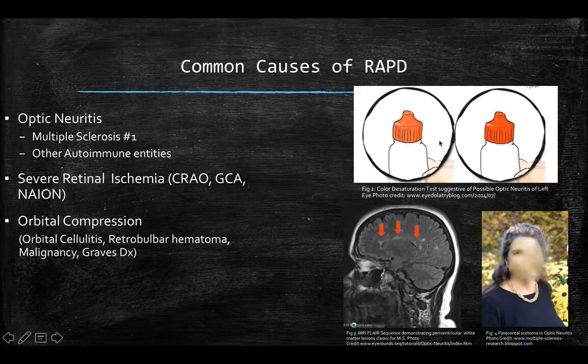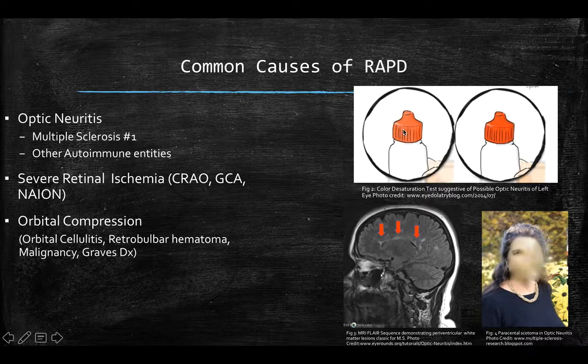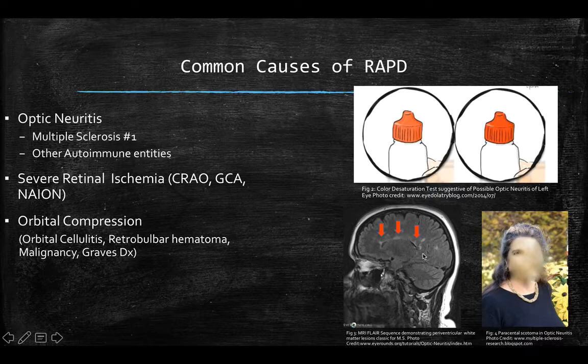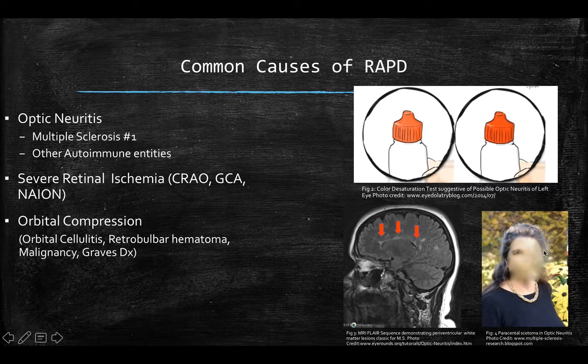A few key clinical findings in an optic neuritis attack include the color desaturation test, where patients have trouble distinguishing the brightness of a red cap. For example, a patient with optic neuritis of their left eye would find the red cap in the normal right eye appears washed out and less bright. This is why we perform color vision tests to assess the health of the optic nerve. For the MS workup, you'll want to get an MRI with FLAIR sequencing to look for classic white matter lesions in the periventricular area.